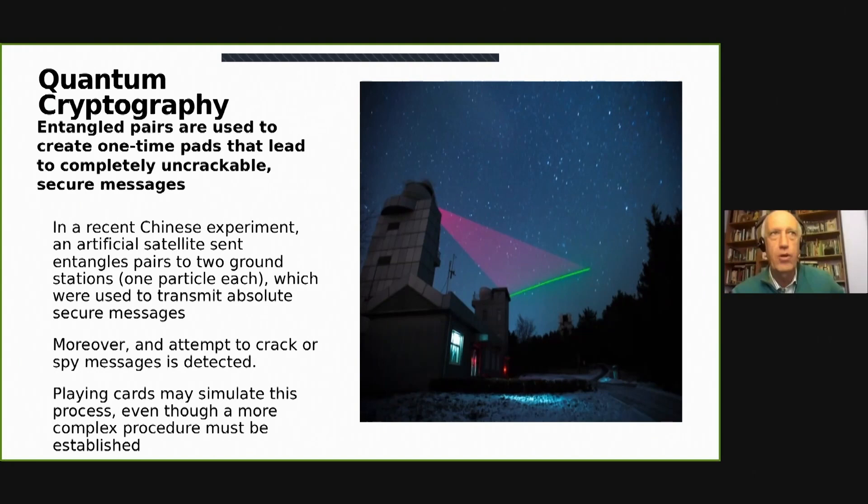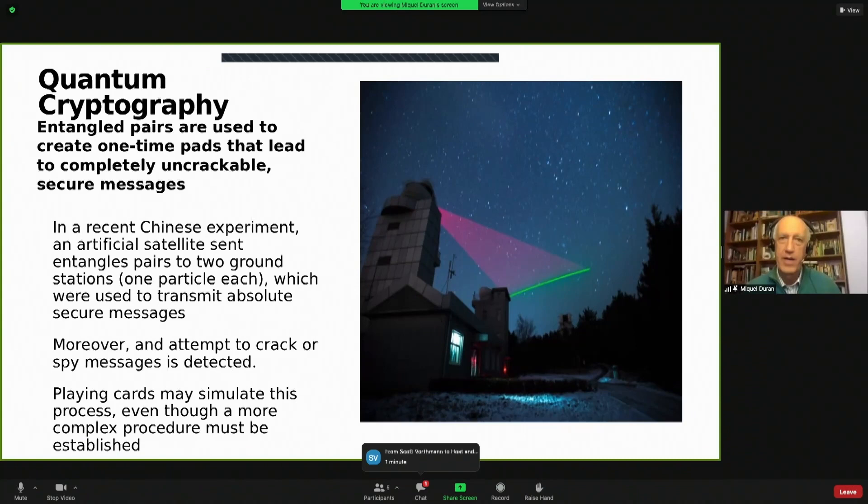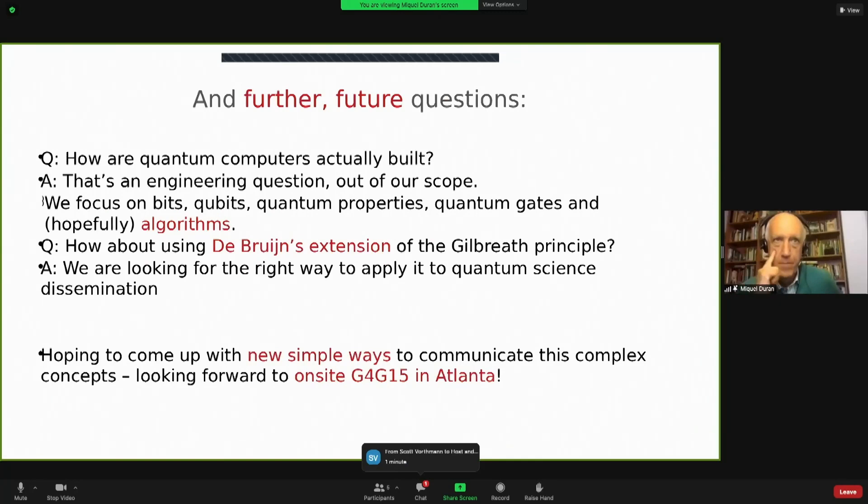We can also use it in a different way for quantum cryptography. That's what the Chinese are doing very, very well. So, they are delivering one-time pads where Alice and Bob interchange messages. And even you can know if a spy is spying.